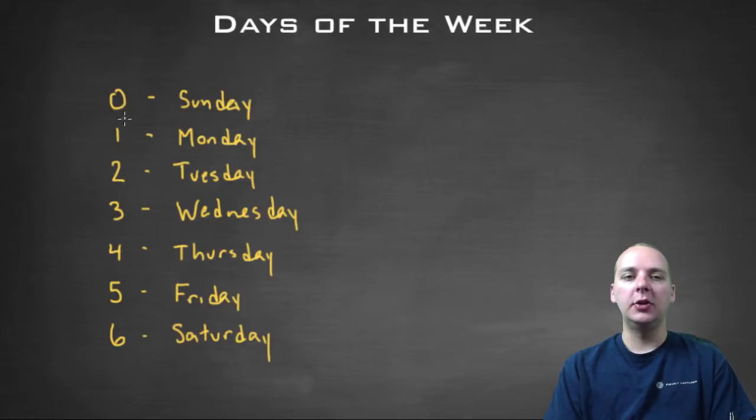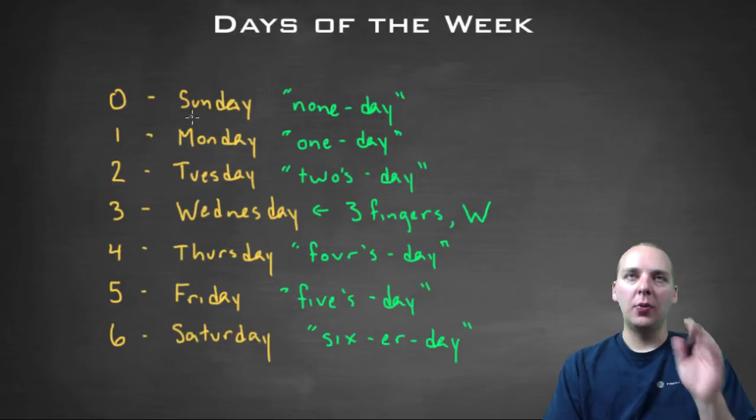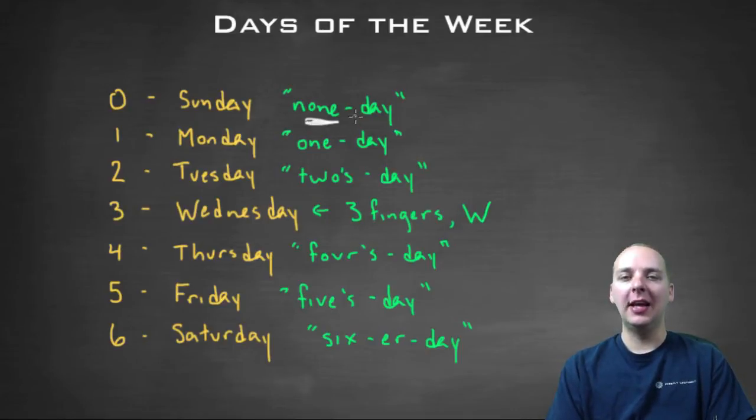Some of you may not have any trouble remembering zero through six, Sunday through Saturday, but most of us use a mnemonic device to remember this more quickly, so let me share with you what I'm talking about here. When I say Sunday, what I think in my head is none day, so Sunday is associated with zero for none day. It's a little cheesy, but it does work, I promise.